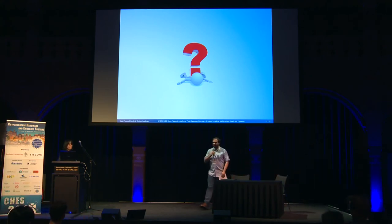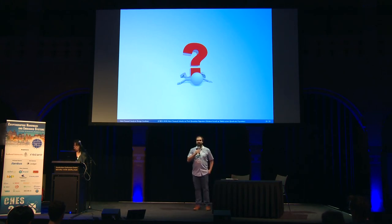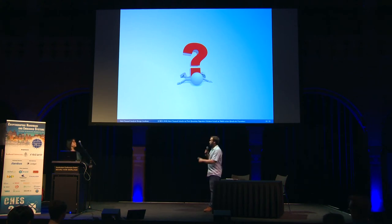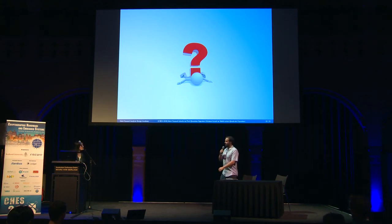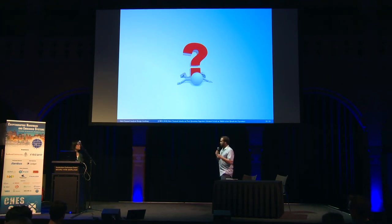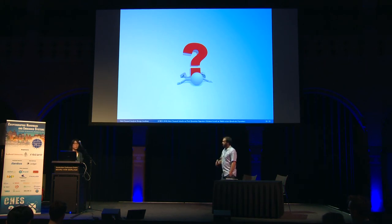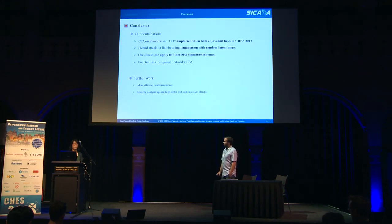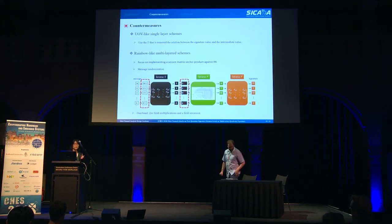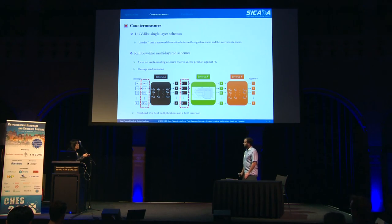Thank you very much for that presentation. We have time for a few questions from the audience. I had a short question: on the countermeasure you had there, what sort of performance overhead was there compared to the unprotected implementation? We only calculated two times M field multiplications and one field inversion. Okay, thank you.